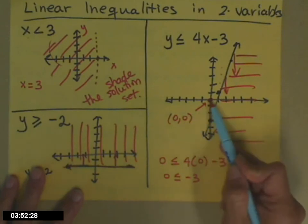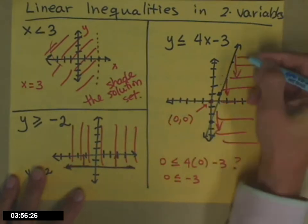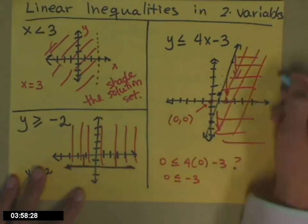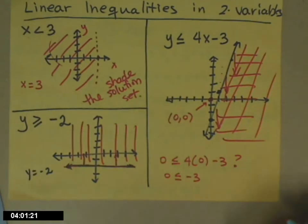Since the origin doesn't work, the origin is not in my solution set, so I shade the other side, which I had done. So it's this stuff to the right of my line that is the solution set. That's the answer.